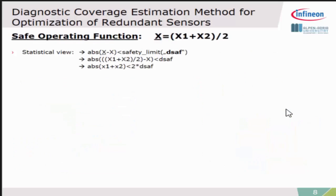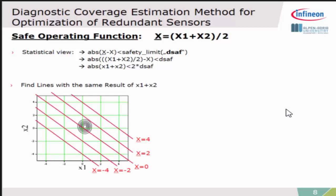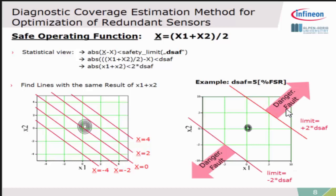The same you can do with the operating functions. It's the addition of the two channels divided by two, so the average. If you take the formulas from before where you want to have a safety limit, the absolute value of the deviation should be smaller than the safety limit. You can insert the formula in between. Then it comes out that the absolute value of X1 plus X2 should be smaller than two times the required safety limit. This again can be done using the joint probability density function. I find all lines where the result of X1 plus X2 is the same. Applying the safety limit, I know outside these safety limits are the dangerous faults which are violating my safety goal.